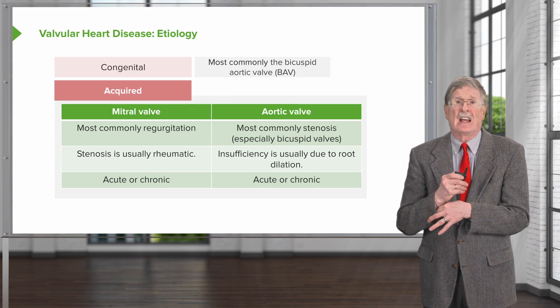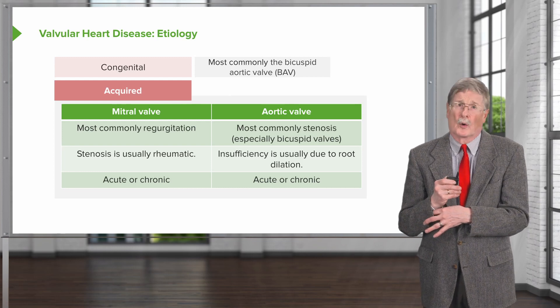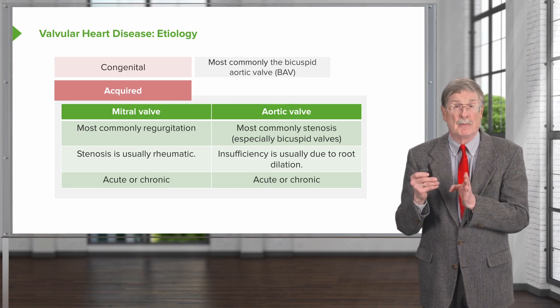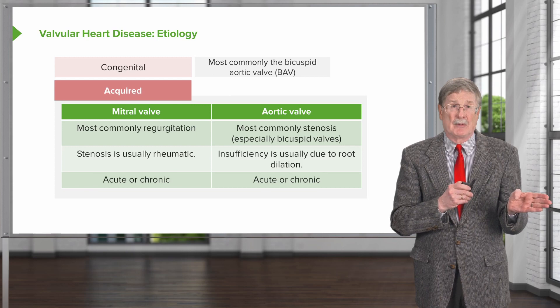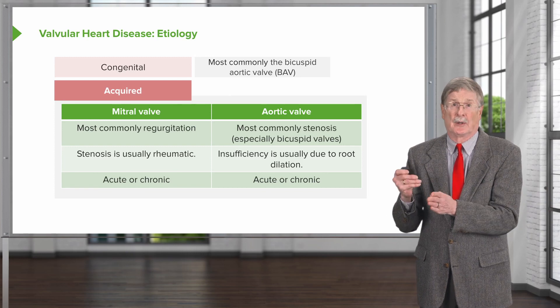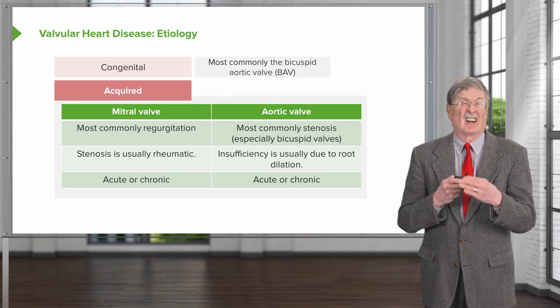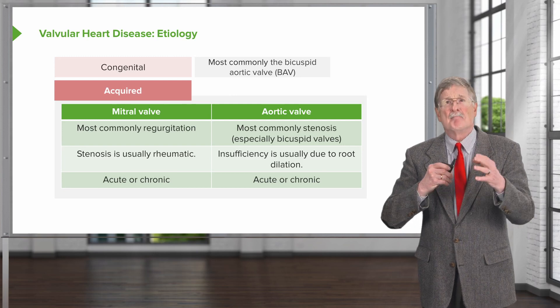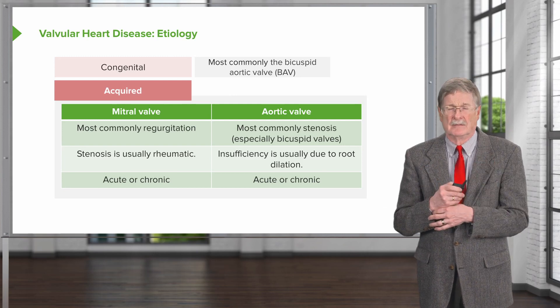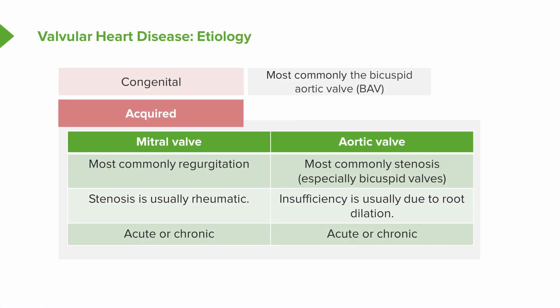Aortic valve disease that's acquired can be acute or chronic, and depending on the tempo, you may be able to adapt for long periods of time. Acute fulminant endocarditis that causes valve destruction of the aortic valve may be lethal. Slow motion insufficiency of the aortic valve, say due to progressive annular dilation, can be actually reasonably well tolerated. So tempo has an effect.